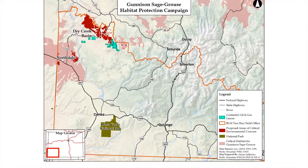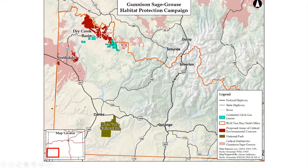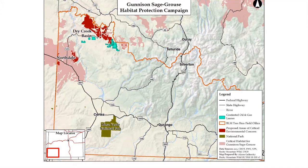There are many habitat protection campaigns underway to conserve the habitat of the Gunnison sage grouse. In dark red are proposed areas of critical environmental concern. In pink are critical habitats for the Gunnison sage grouse — we would very much like to prevent cheatgrass invasions in these areas so the sagebrush ecosystem can thrive and keep supporting these endangered grouse populations. In light blue you can see contested oil and gas leases, so there's a conflict between fossil fuel recovery and protection of the sage grouse.